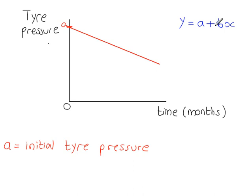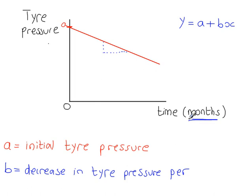And then b, which represents the gradient of the graph. Because the gradient is negative, the tyre pressure is decreasing. So that's the decrease in tyre pressure per month.